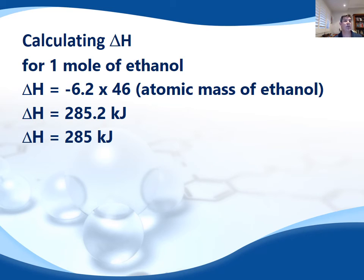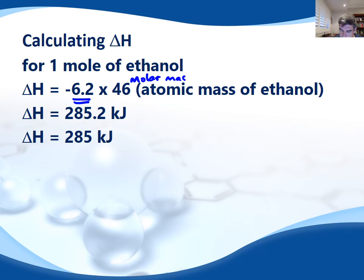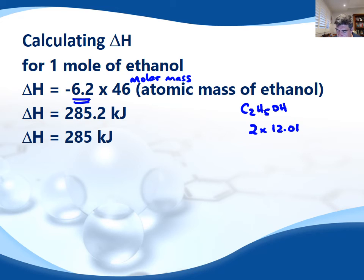Usually we want the molar heat of combustion. To get that, we must multiply our delta H value per gram by the molar mass — in this case, the molar mass of ethanol. The formula for ethanol is C₂H₅OH. When calculating it, that's 2 carbons at 12.01, and 5 plus 1 equals 6 hydrogens at 1.008 — look these up on your periodic table in your exam.